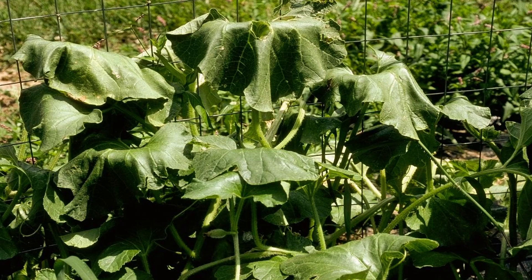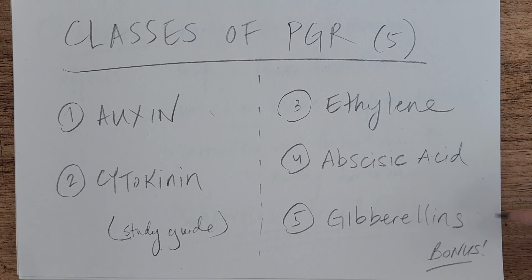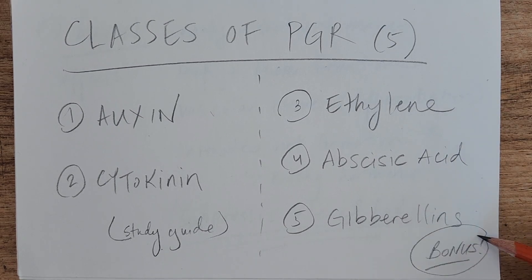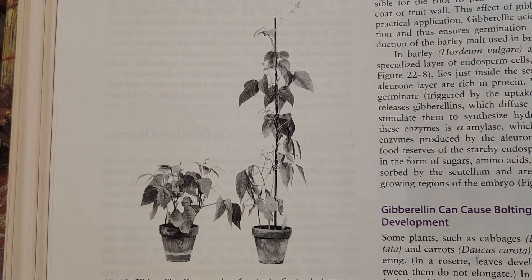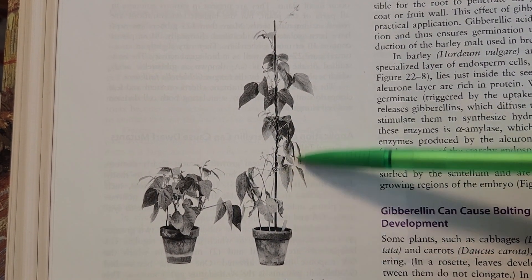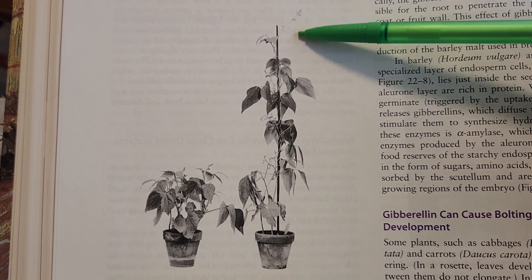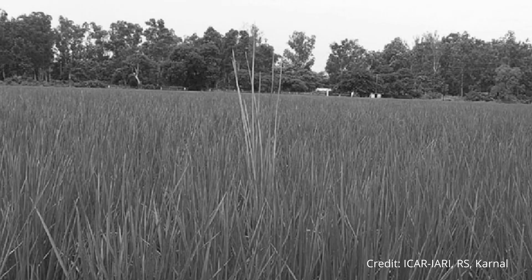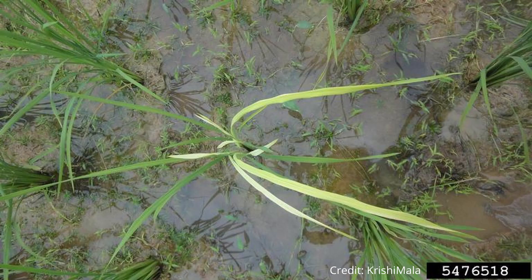The fifth and last main class of plant growth regulators are the gibberellins. They increase plant height. Gibberellins were first discovered when a Japanese scientist saw that rice seedlings were getting really spindly and falling over. It turned out a parasitic fungus was producing gibberellic acid, causing this excessive growth.